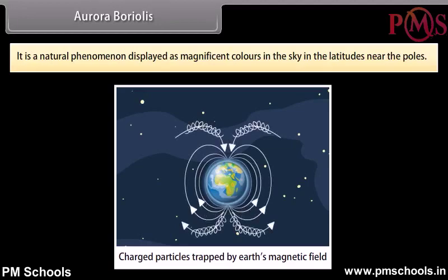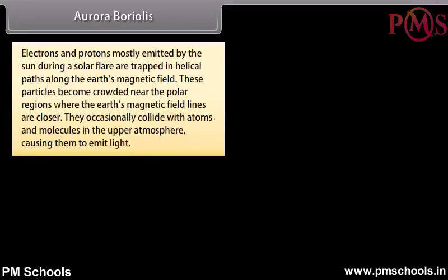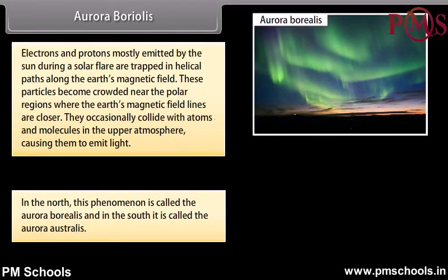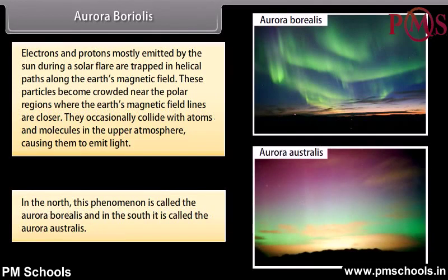Aurora Borealis is a natural phenomenon displayed as magnificent colors in the sky at latitudes near the poles. Electrons and protons, mostly emitted by the sun during a solar flare, are trapped in helical paths along the earth's magnetic field. These particles become crowded near the polar regions and occasionally collide with atoms and molecules in the upper atmosphere, causing them to emit light. In the north this is called the aurora borealis, and in the south it is called the aurora australis.